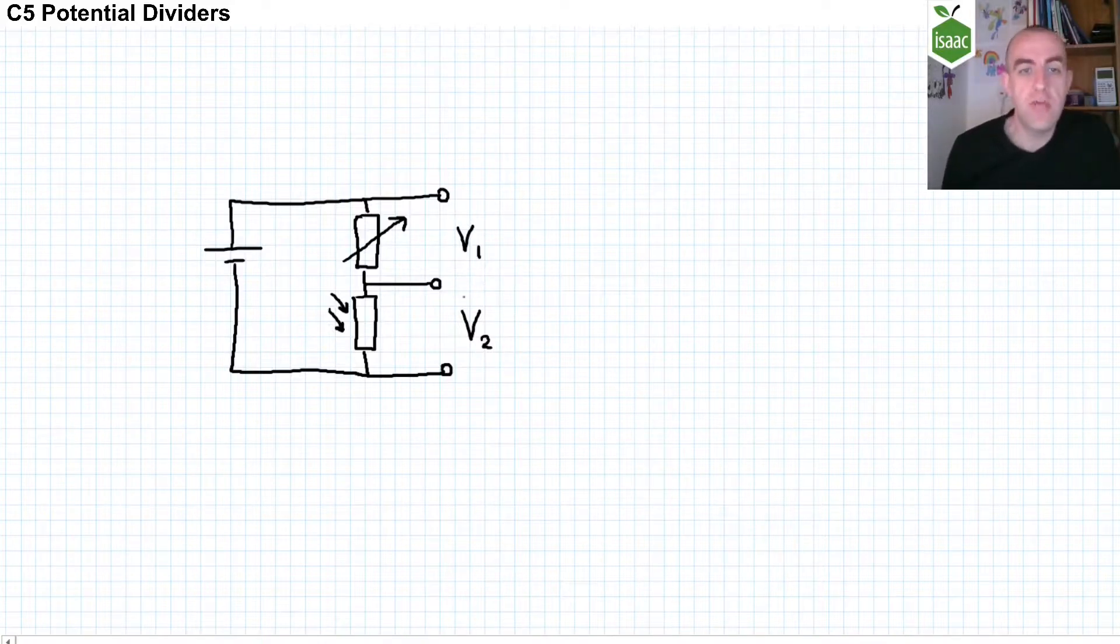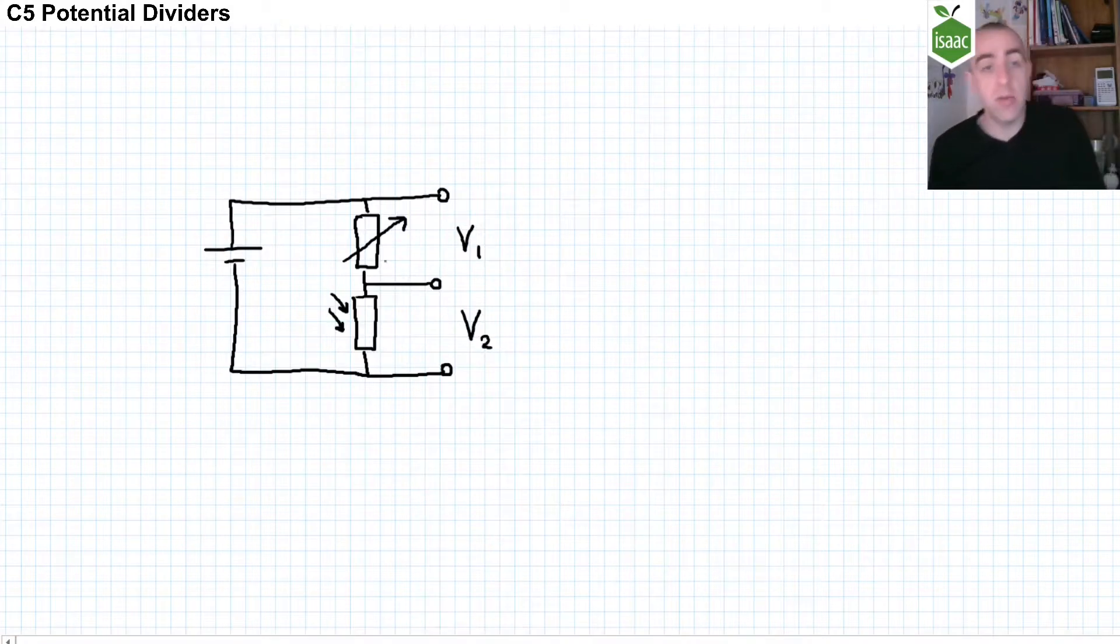And to tune what this ratio is, often sensing circuits will have a variable resistor, so you can select what those voltages are when you start.